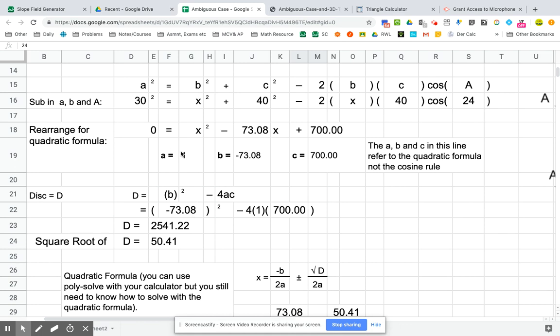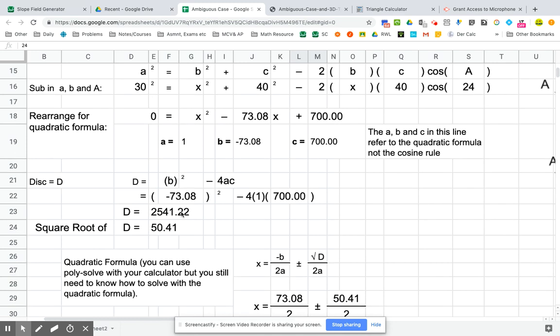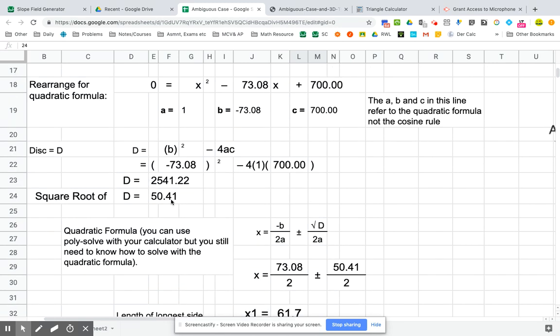So A is one, B works out to negative 73.08 and there's C. So I substitute that into the discriminant calculation and it works out to a positive. Positive discriminant means two solutions. Two solutions in this case means two different X values most of the time. So we find out that the discriminant is 2,541 and we find the square root of the discriminant.